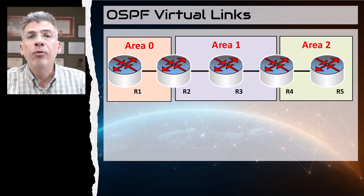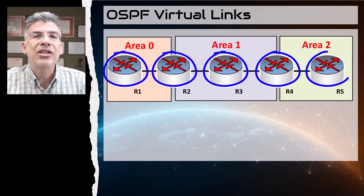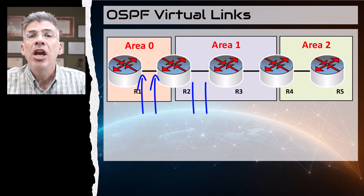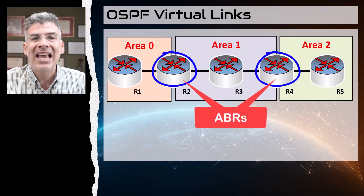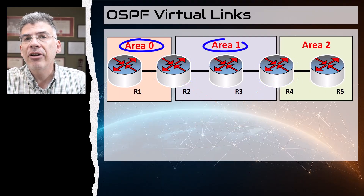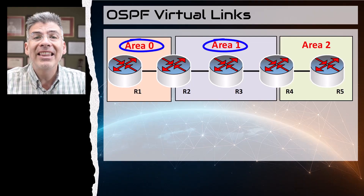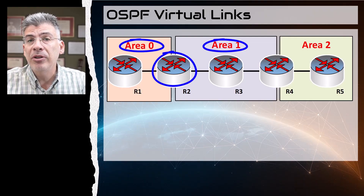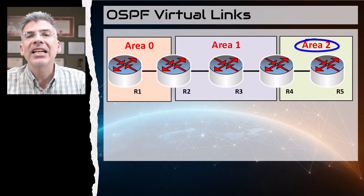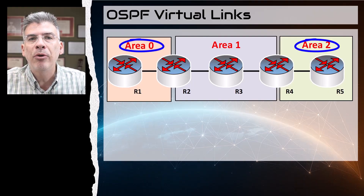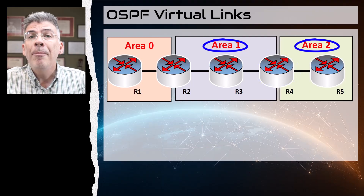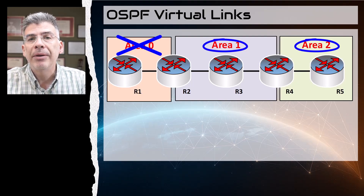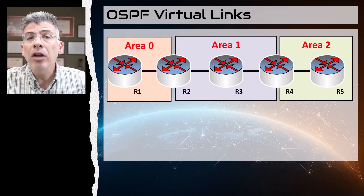Take a look at this topology here. If we were to configure these routers as OSPF routers and assign these interfaces to the indicated OSPF areas, we would have R2 and R4 as ABRs. Area zero and area one are directly connected to each other via the ABR R2, and that's an acceptable arrangement. However, area two does not connect directly back to the backbone area. The ABR R4 has interfaces connected to area one and area two, but none to area zero — the backbone area — and that violates the rule and breaks the OSPF topology. This network will not work correctly.